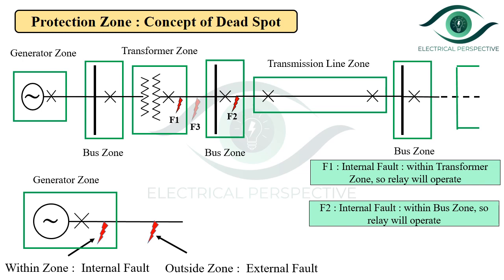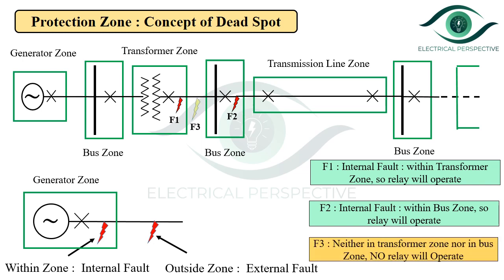Now consider fault F3. Is F3 in the transformer zone? No. Is it in the bus zone? Again, no. So F3 is neither in the transformer zone nor in the bus zone, meaning no relay will operate. Even though it is a fault, since it does not fall under any zone, no relay will operate and it will not be cleared by the protection system — and this may damage the healthy parts of the system. The unprotected part is called a dead spot or dead zone. As shown in the figure by the pink color line, these unprotected parts are called the dead zone.